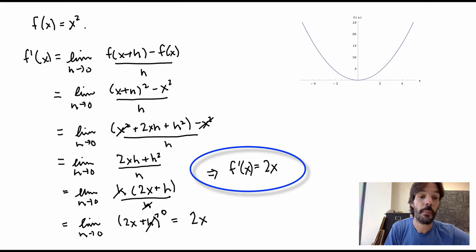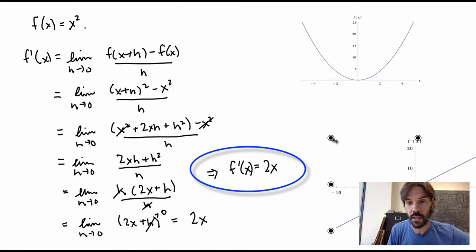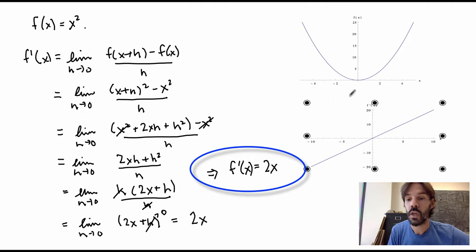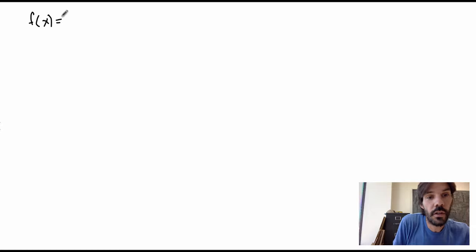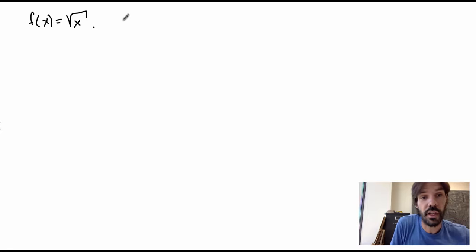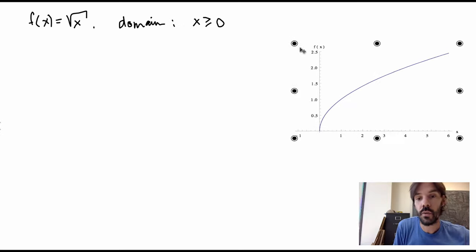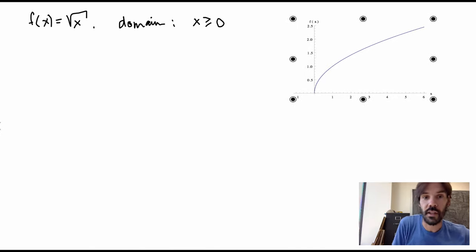So what we've calculated is that the derivative of the square function is 2x, which is what we obtained previously. The graph of that derivative is consistent with the geometric interpretation of the derivative as giving the slope of the tangent line of the original graph. Now let's do a more complicated example: calculating the derivative of the square root function, f(x) = √x. We should notice that the domain of this function is restricted — the square root only makes sense if x is positive, so the domain is x ≥ 0.